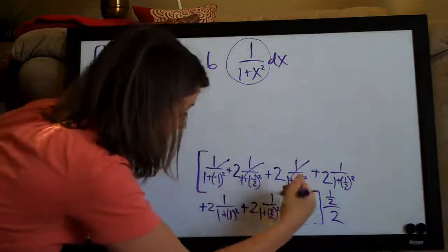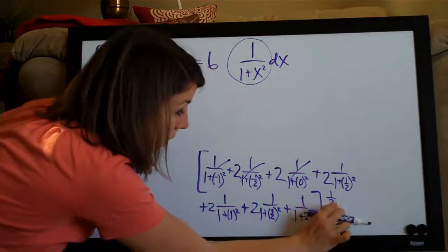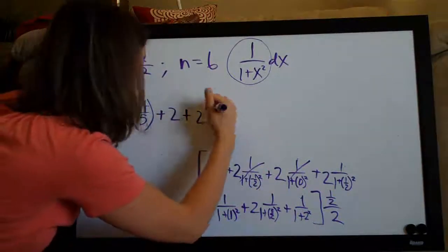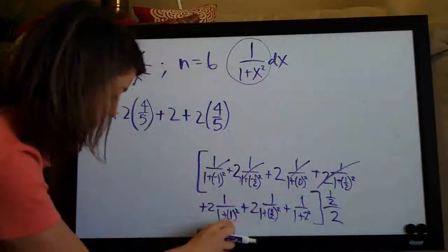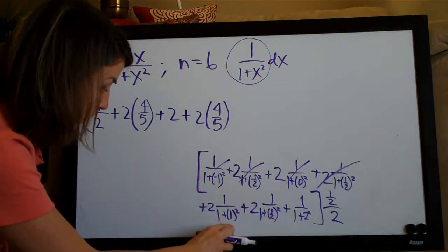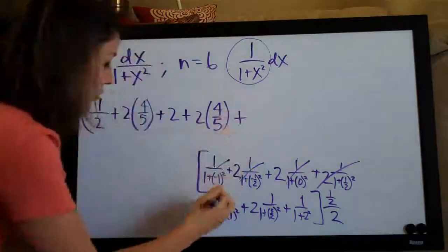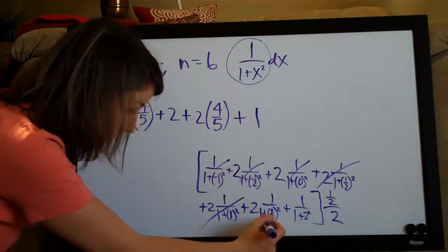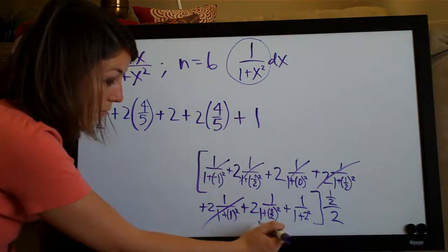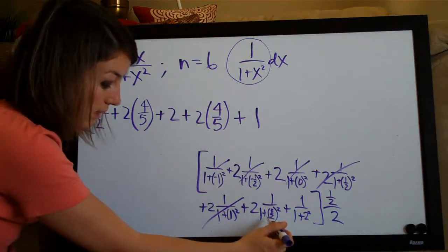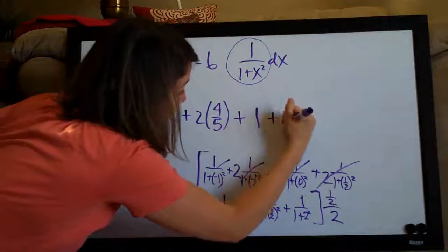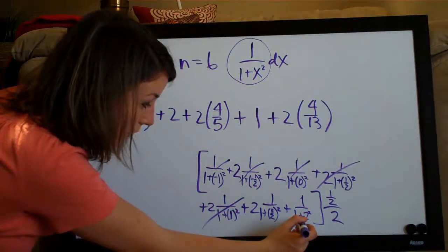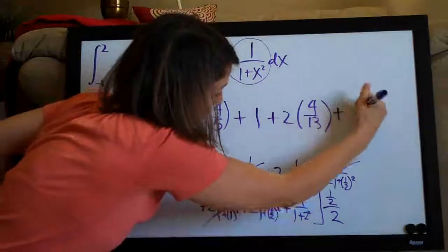We did that one, that one, and that one. 1 half squared is 1 fourth plus 1 is 5 fourths. 1 divided by 5 fourths is 4 fifths. So, plus 2 times 4 fifths, again. So that one, 1 squared is 1, so we've got 1 plus 1 is 2. So that's 1 half. So, plus 2 times 1 half is just 1. 3 half squared is going to be 9 fourths plus 1, so we've got 4 fourths plus 9 fourths is 13 fourths. 1 divided by 13 fourths is the same as 4 over 13. So, plus 2 times 4 over 13. And then 2 squared is 4 plus 1 is 5. 1 over 5 there.